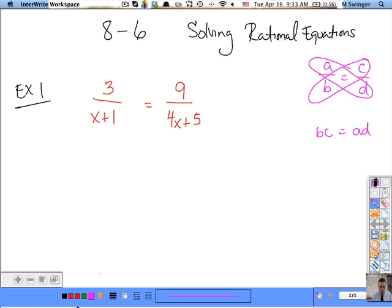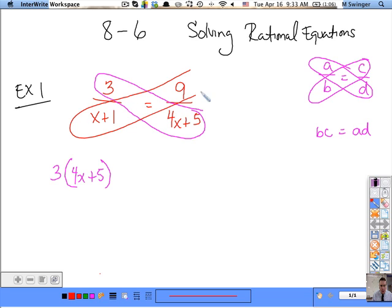So what we're going to do is we're going to take 3 times 4x plus 5. And you have to use parentheses or you get it wrong. This times this equals this times this. So equals 9 times x plus 1. After that it's normal. You're just solving like normal.